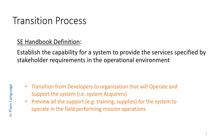The System Engineering Handbook formally defines the transition process as establishing the capability for a system to provide the services specified by stakeholder requirements in the operational environment. To parse that, the transition process is going to provide the services needed to operate the system as it demonstrates its ability to perform the stakeholder requirements in an uncontrolled, open operational environment.